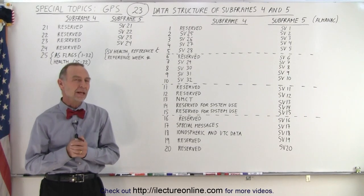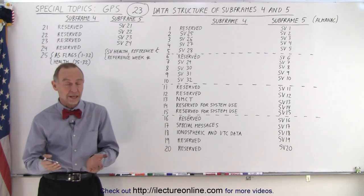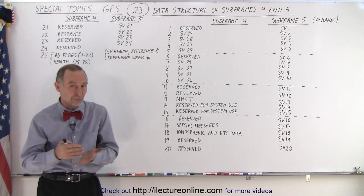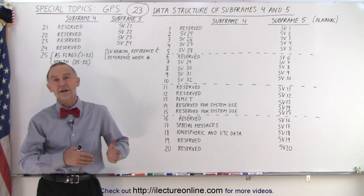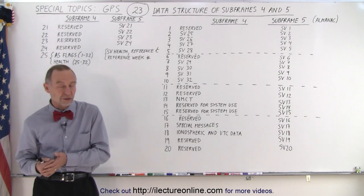Welcome to our lecture online. Now let's take a look at subframes 4 and 5 in a little bit more detail. Remember we need 25 total sets of subframes 4 and 5 to get the entire message across the transmission from the satellites to the receivers.